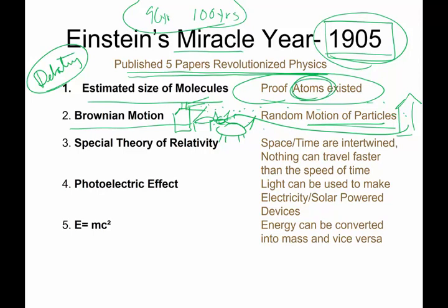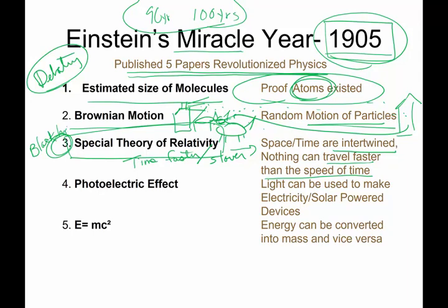The other three things Einstein came up with are more famous. First is the idea of special relativity. Special relativity is the concept that space and time are intertwined. Nothing can travel faster than the speed of light, and time can flow faster or slower if you are near a large gravitational body. For example, if you've seen the movie Interstellar, they talk about relativistic time. We will talk more about this when we get to black holes, because black holes really mess with time and distance.